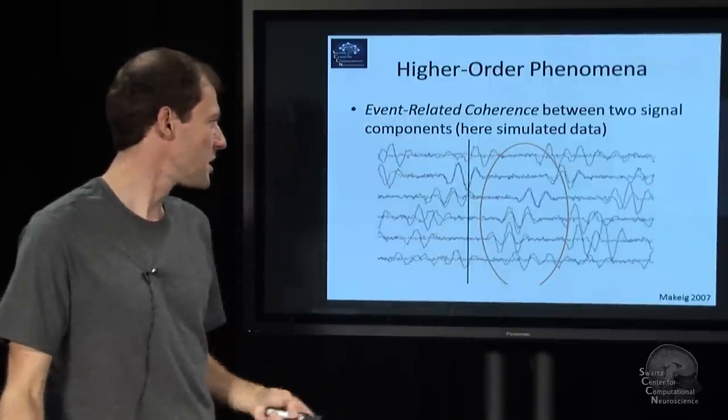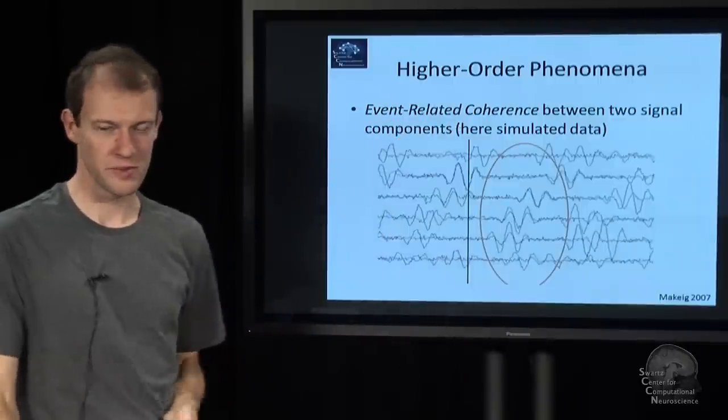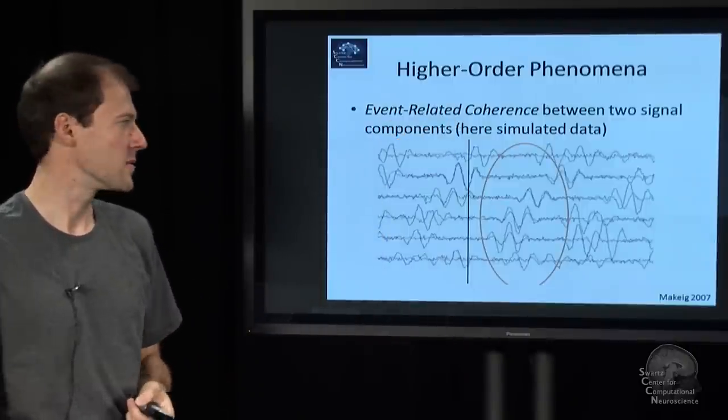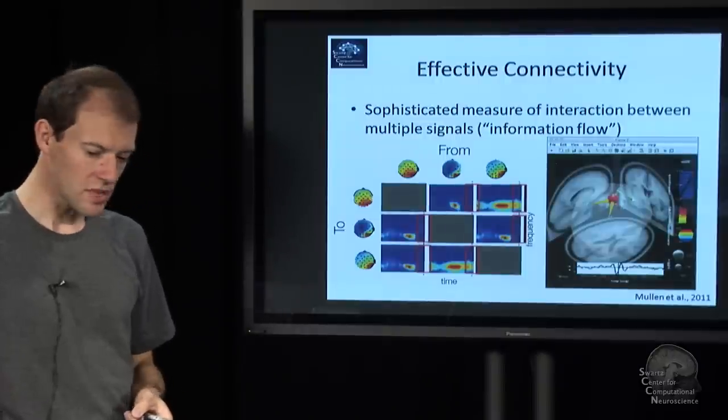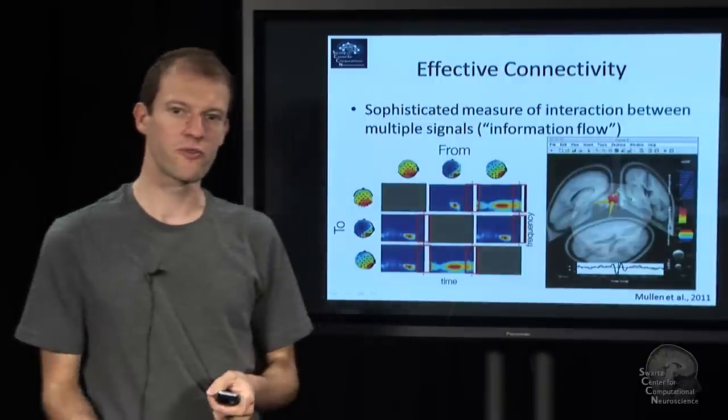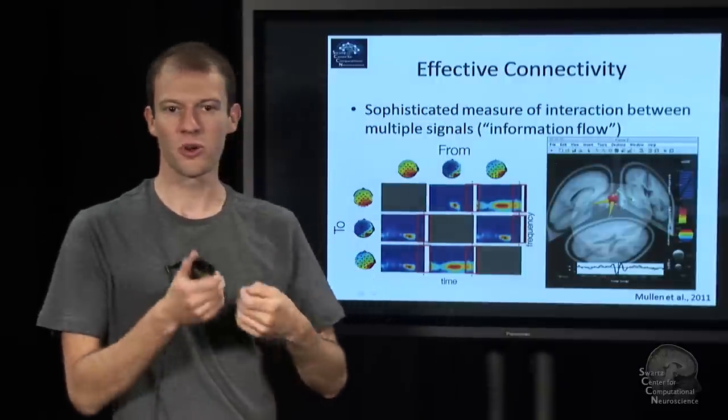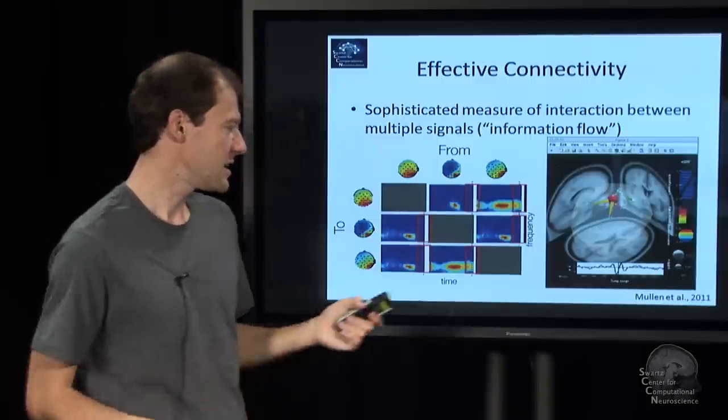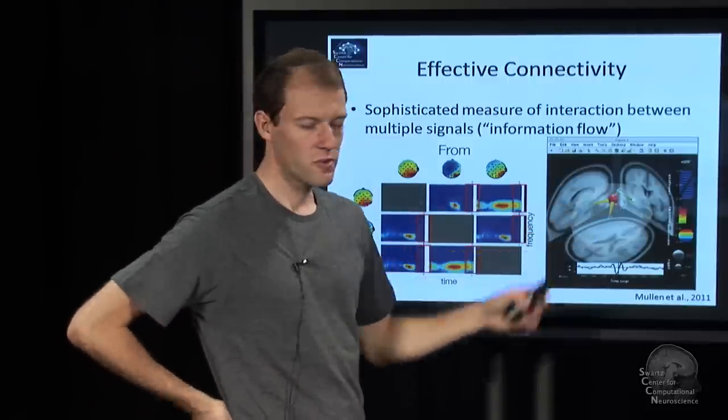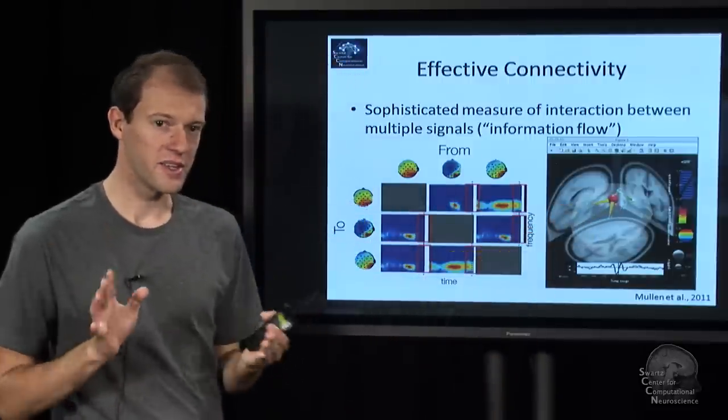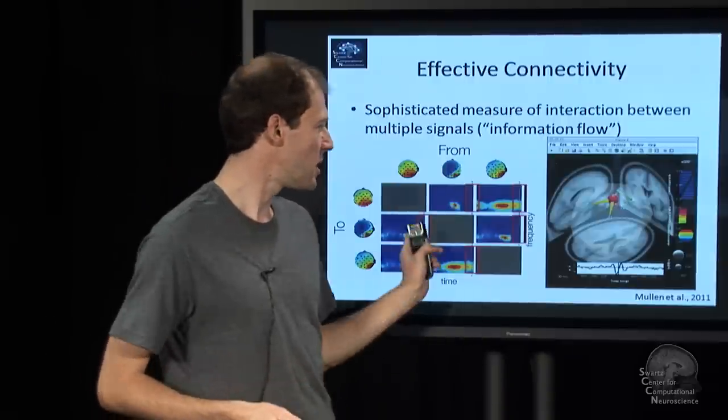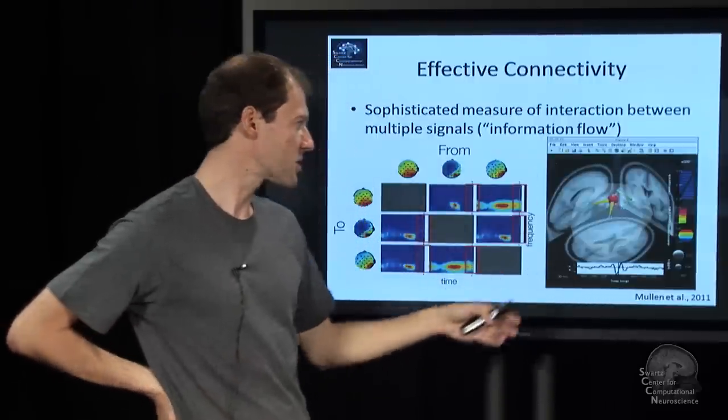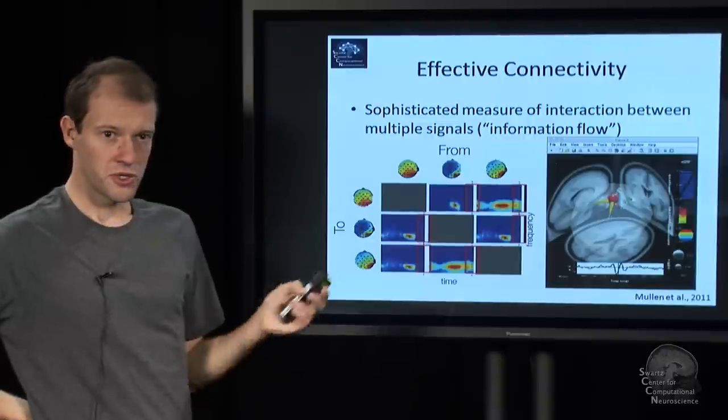But to get there, you already need to have, say, the source time courses, because in the channels you don't see much like that. By the way, this comes from a simulation, but there's stuff like that also happening in real data. And you can go actually a lot farther beyond mere coherence between sources.